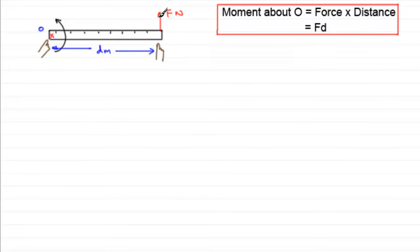Now, if I'm pushing in this direction, then the ruler wants to turn in an anti-clockwise sense. We talk about the sense of the moment. In this particular example, the sense is anti-clockwise. The ruler wants to turn anti-clockwise about O.